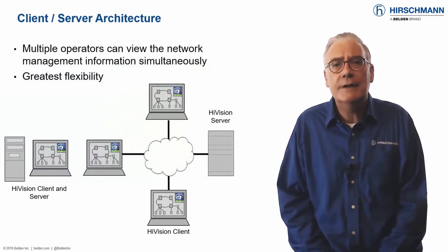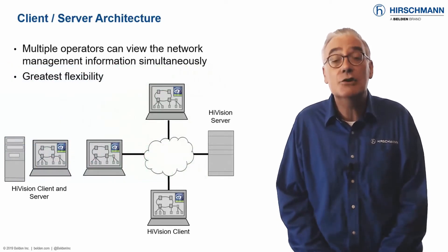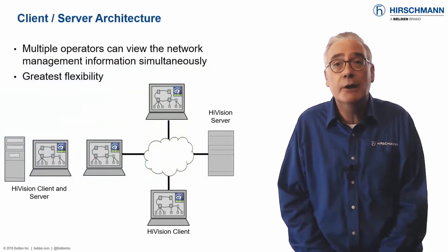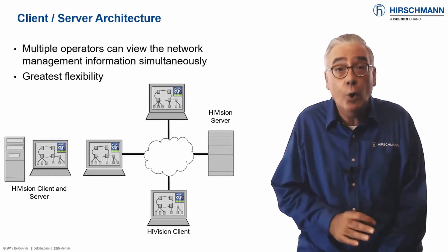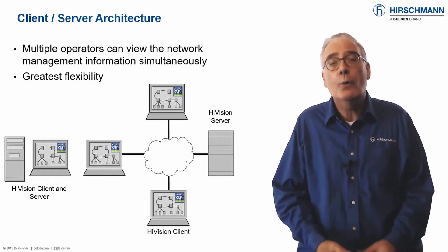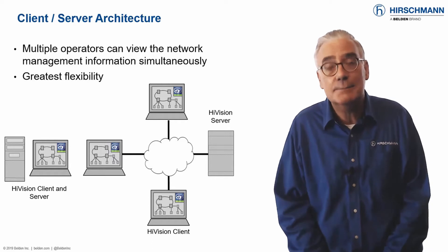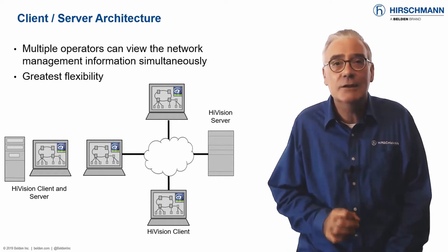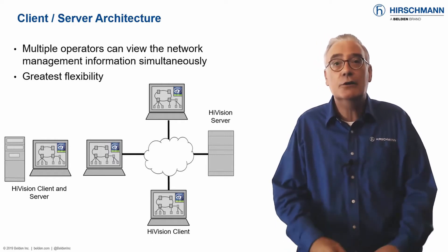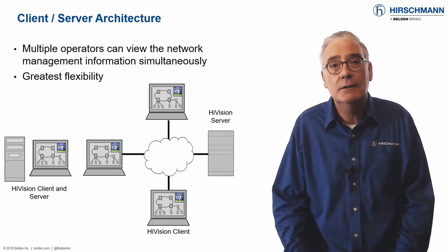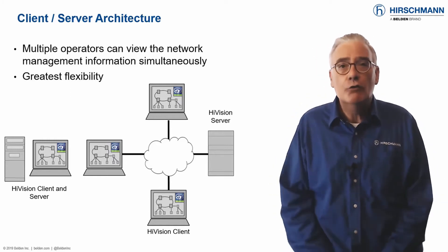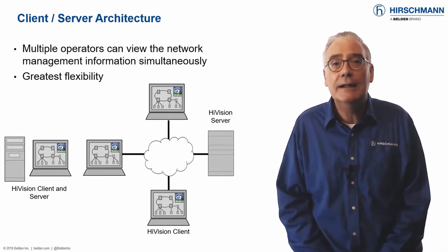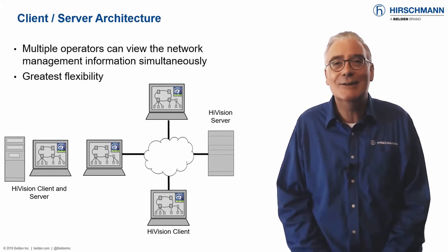The functionality of Industrial HiVision is divided into two components. The server is the core of the system, where all the processing takes place. The client supports the graphical user interface. For a small installation, running the server and the client on the same hardware offers a perfect solution.